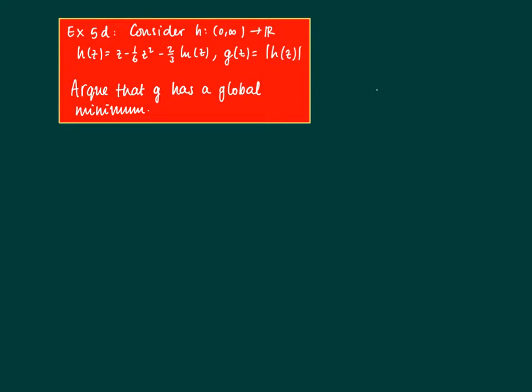We consider the function G(Z) = |H(Z)|. We need to argue that G has a global minimum. Because of the absolute value, we know the values of G are at least zero, so if we can find a zero, we're done.